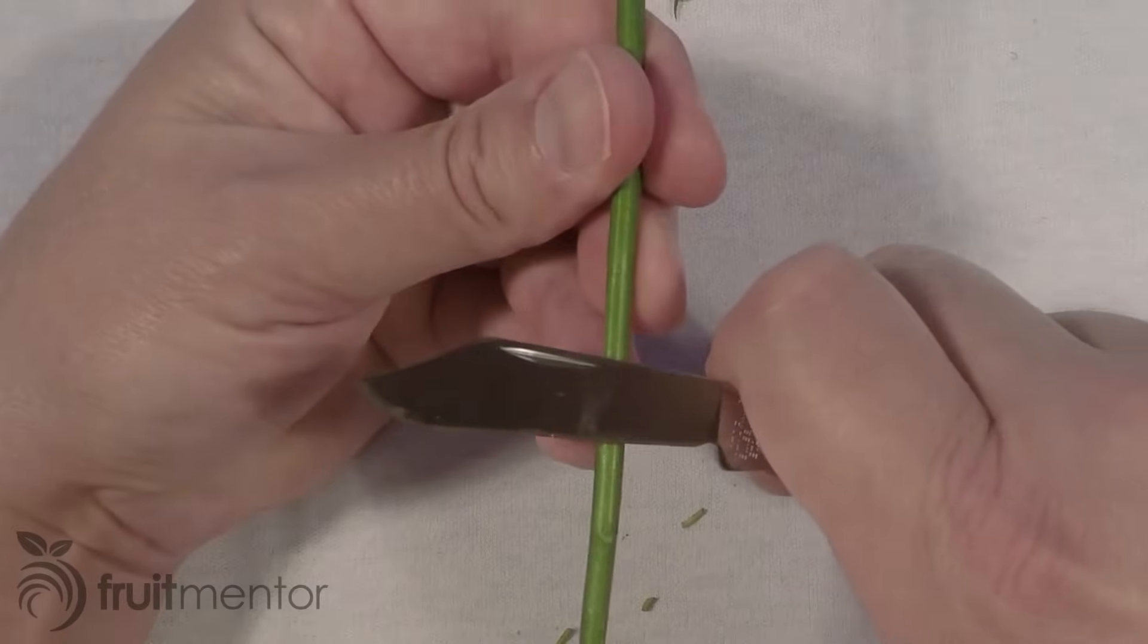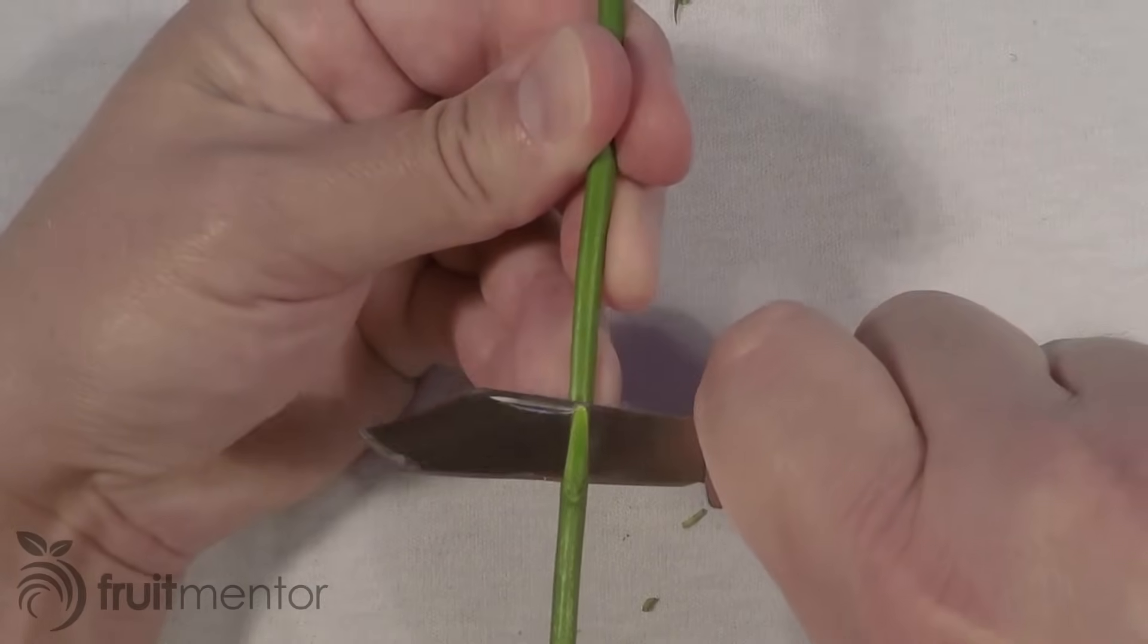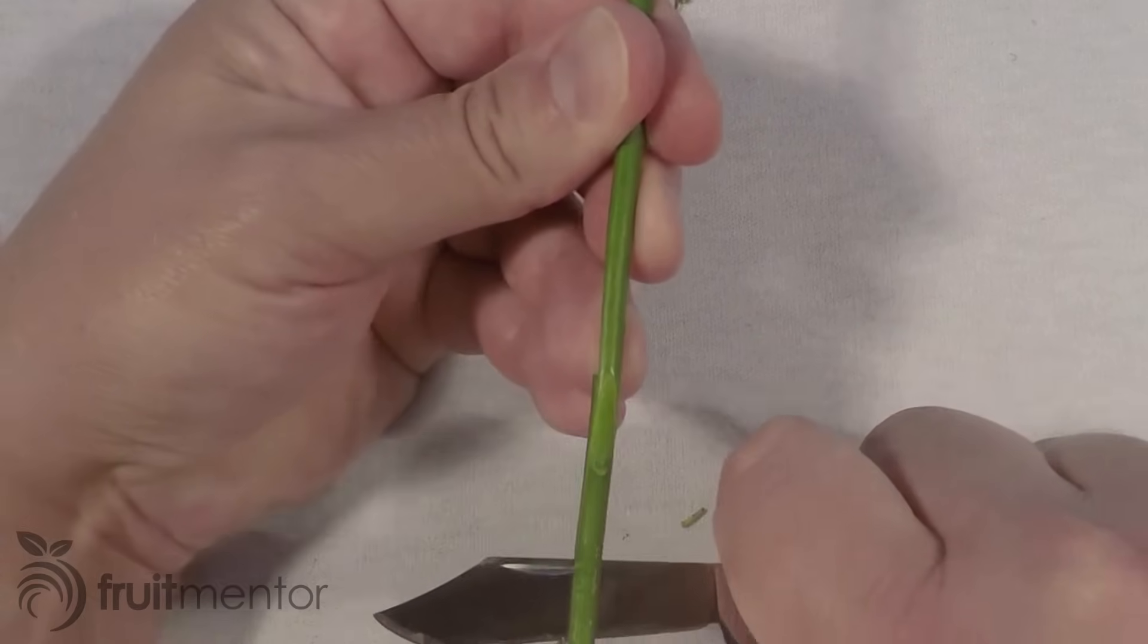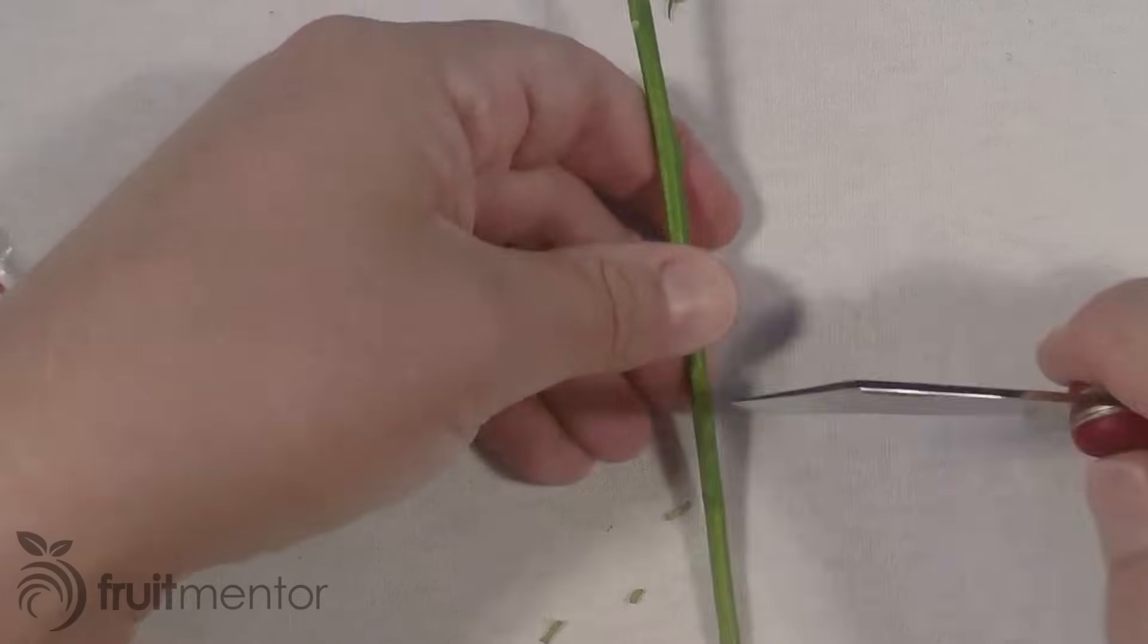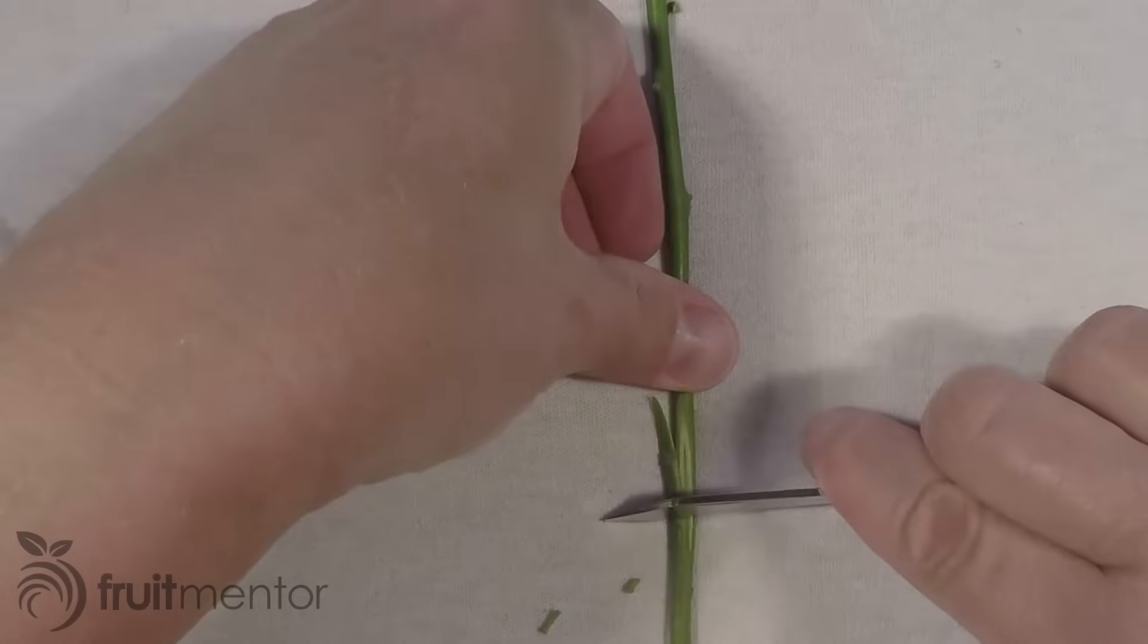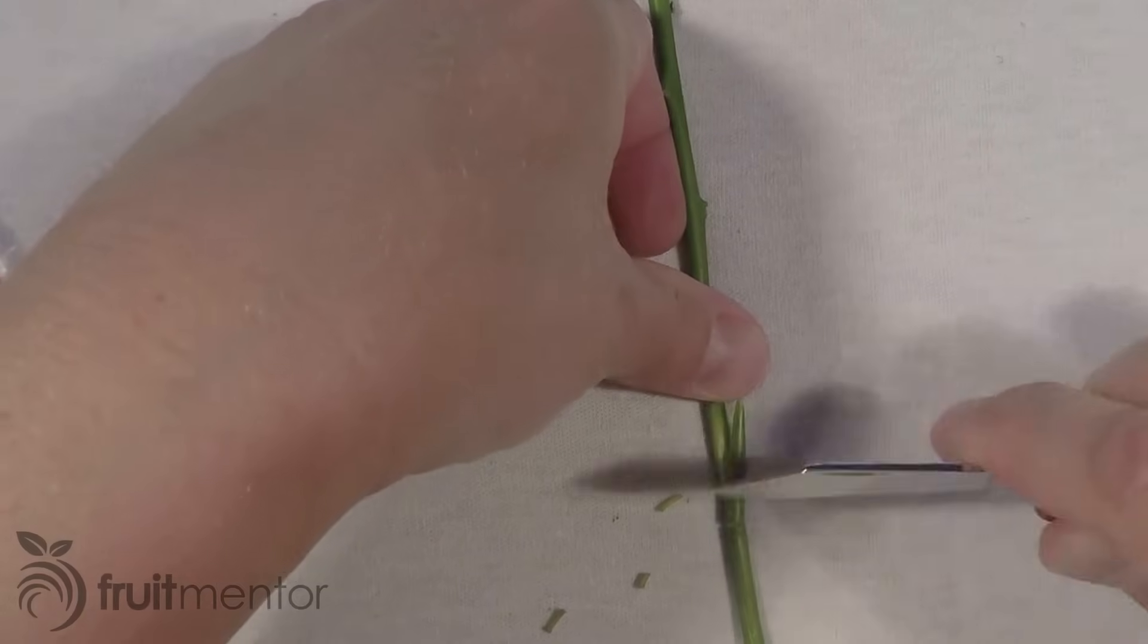Citrus cuttings have the potential to spread tree-killing diseases. It is often not apparent when a tree is infected with a fatal disease. This makes the source of citrus budwood for grafting very important.